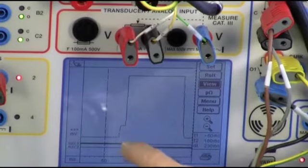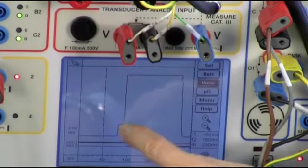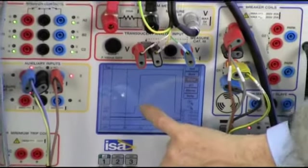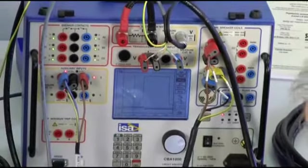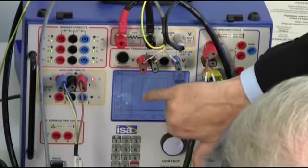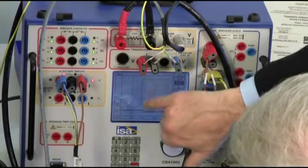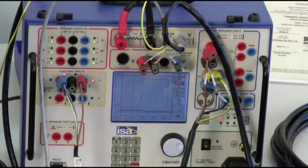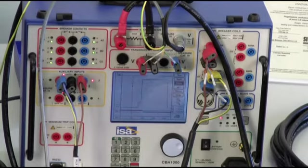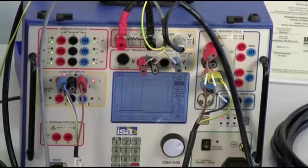What does it mean? It means that we have injected the current, the contact was closed, this is the value of the voltage drop across my closed contact, and here, this part here, is the most important one, because that is the part when the contact actually moved and during which we have performed the recording.